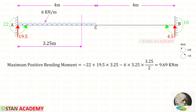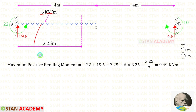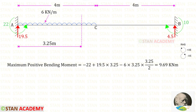Now let us find the maximum positive bending moment. Ma acts anti-clockwise (negative); the vertical reaction Ra acts upward causing a clockwise moment (positive); and for the UDL we multiply the load by the distance and the distance-by-2. Finally, the maximum positive bending moment is 9.69 kNm.